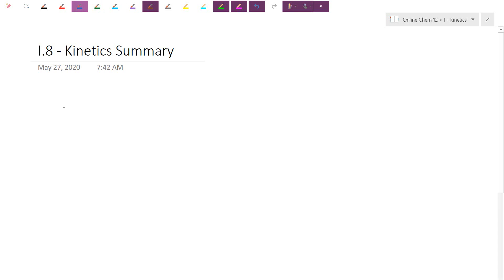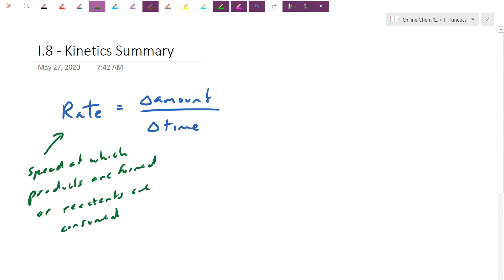We'll practice through a few problems and start preparation for our test. So starting off here with unit number one, our main concept was to look at a chemical rate. Essentially we were saying a rate is going to be measuring some change in amount versus change in time. So a rate, if you were going to define it, this is basically the speed at which products are formed or reactants are consumed.